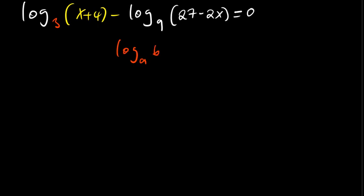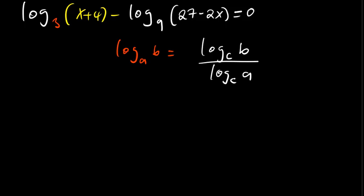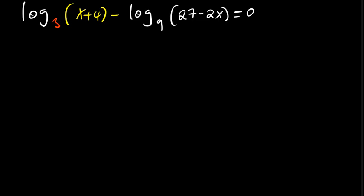So how do we change the base? If I've got log base A of B and I'm changing this to base C, I write log of B divided by log of A, both using base C. So I've changed this from base A to base C. Now using the same formula I'm going to change this log from base 9 to base 3.